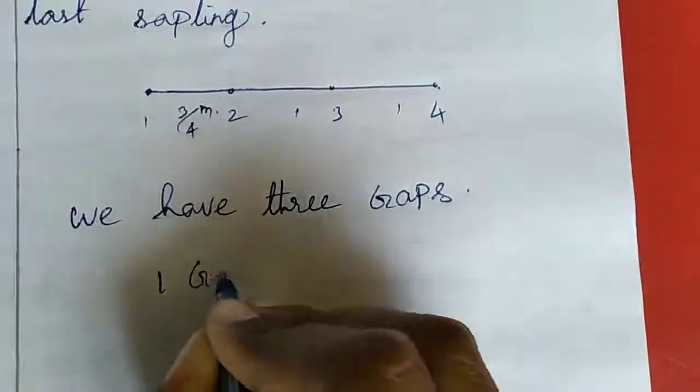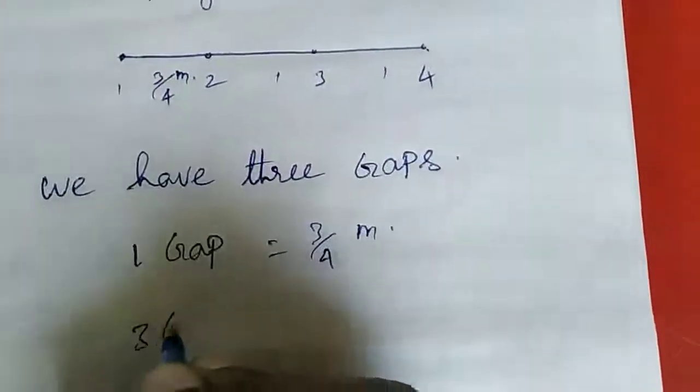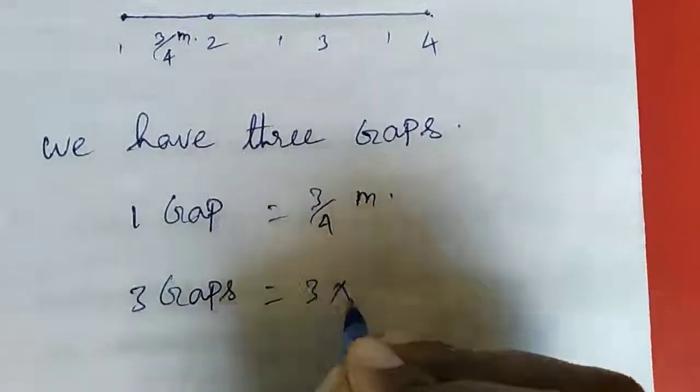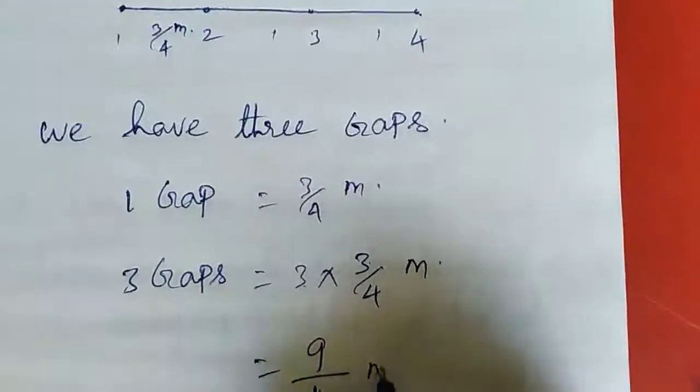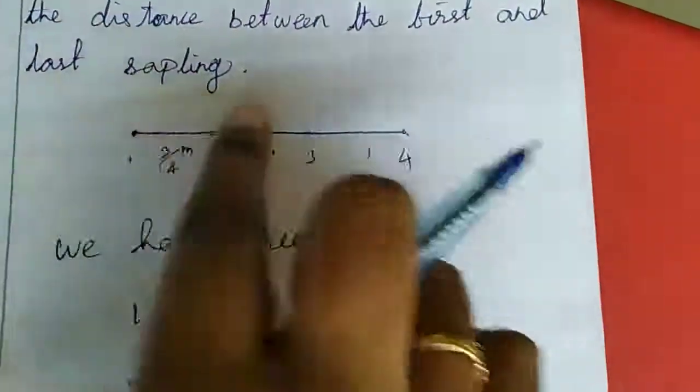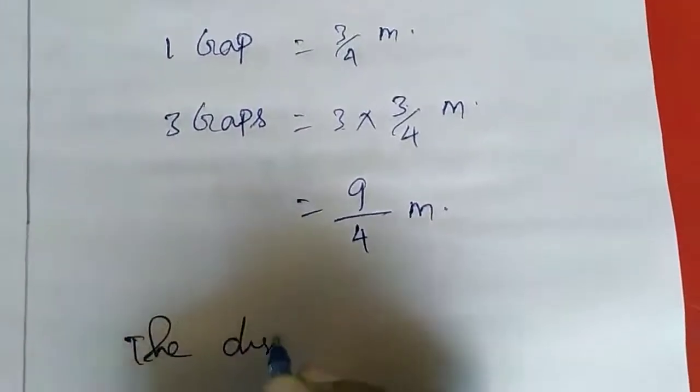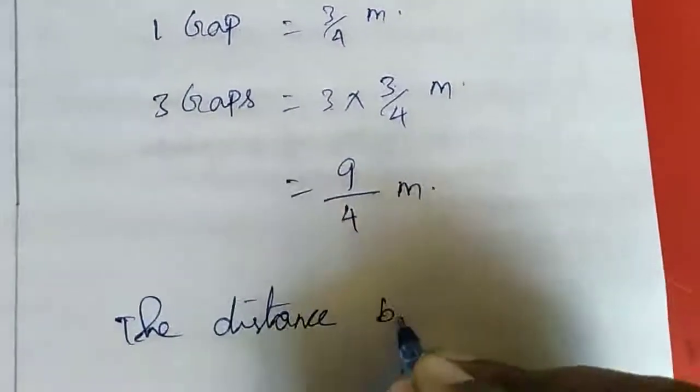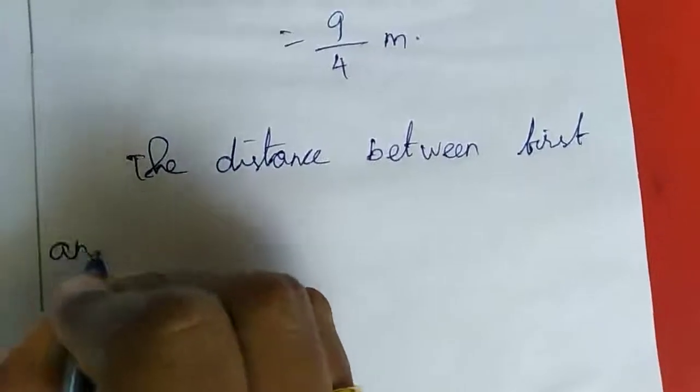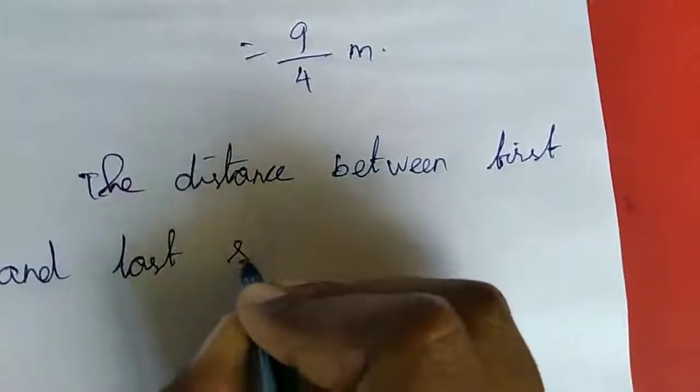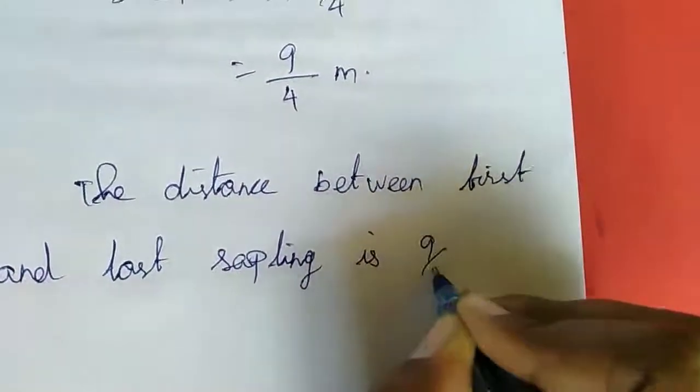1 gap equals 3/4 meter. 3 gaps equal 3 times 3/4 meter. If you multiply 3, you get 9/4 meter. So the distance between the first and last saplings is 9/4 meter.